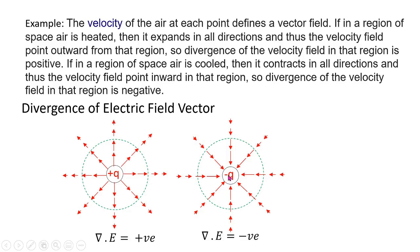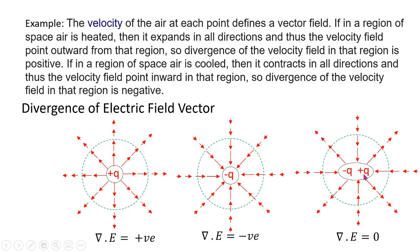But if the charge is negative, then electric field vectors point inward towards the charge. If we consider a spherical surface, then the electric field is inward through that surface, so divergence is negative. If the same spherical surface encloses a positive charge and a negative charge of the same magnitude, then the net flux inward equals the net flux outward, so the net flux is zero and therefore divergence is zero: del dot E equals zero.